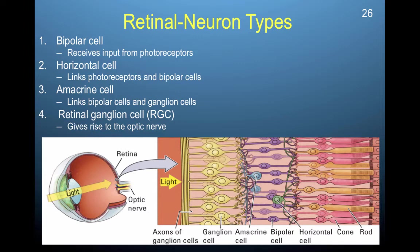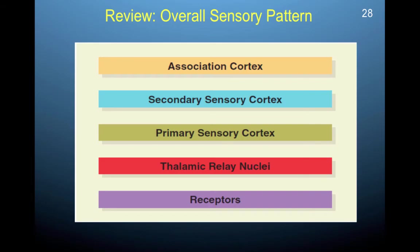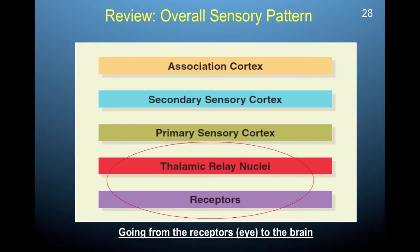Amacrine cells also link cells — they link bipolar cells and retinal ganglion cells. The retinal ganglion cells give rise to the optic nerves. Their dendrites connect with the amacrine cells and bipolar cells. Once color information has been processed, it passes down these very long axons. The axons of ganglion cells together make up and comprise the optic nerve, taking information from the receptor in the eye into the brain.